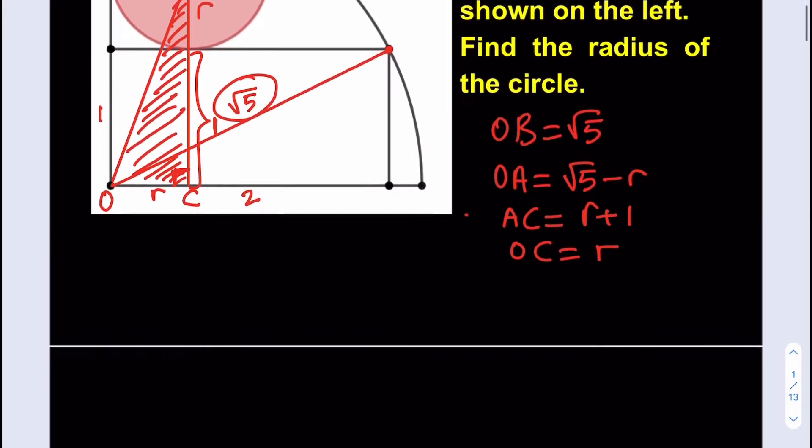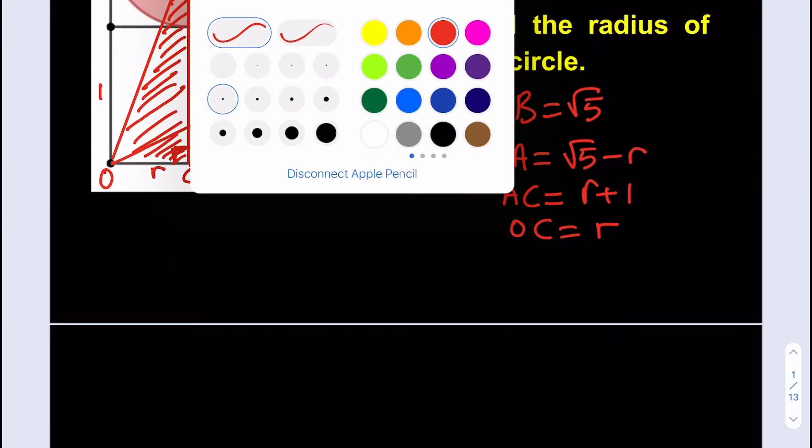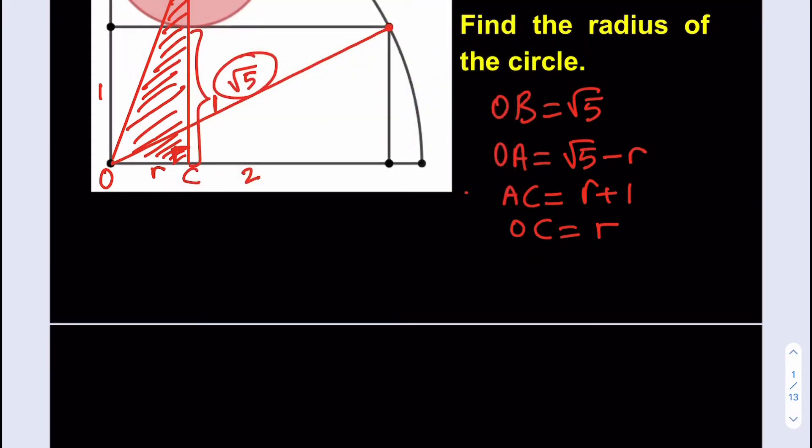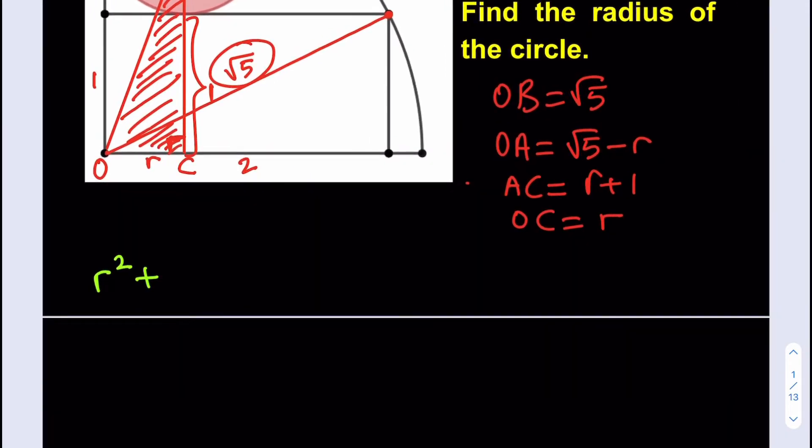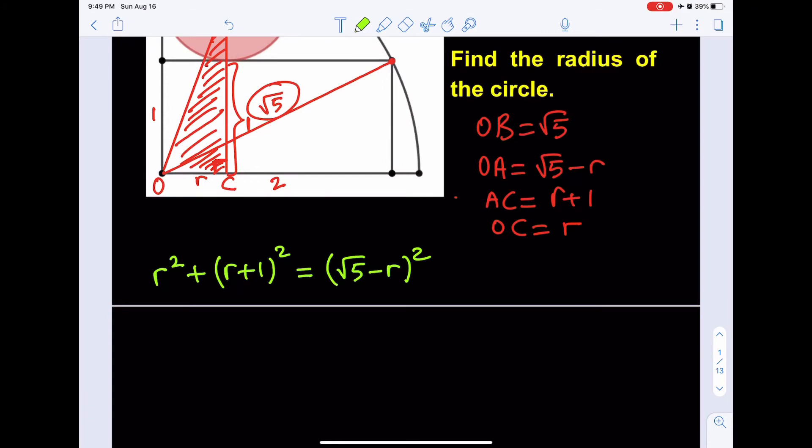So let's go ahead and set up our equation here. Our equation is going to look like this. We're going to have R squared, which is one of the legs. And then we're going to have R plus 1 squared, which is AC squared. And the hypotenuse is root 5 minus R. The equation, by solving this equation, we're basically going to be able to solve for R, right? That's our purpose.